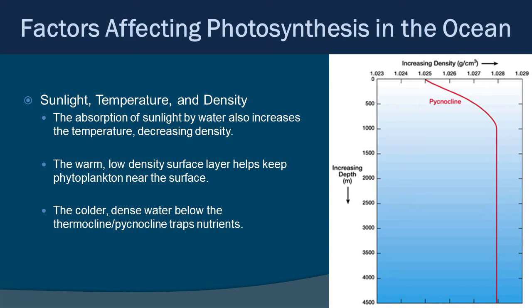Sunlight and temperature are tied together. The absorption of sunlight by water increases the temperature, and as temperature increases, that decreases density because you're increasing the molecular motion of the water and molecules spread farther apart. The warmer, low-density surface layer actually helps keep phytoplankton near the surface, which is good. But the colder, denser water below creates the thermocline or pycnocline we talked about before, forming a density barrier that also traps nutrients in the deep water. Density is tied to that layering of the ocean and to temperature and salinity as well.